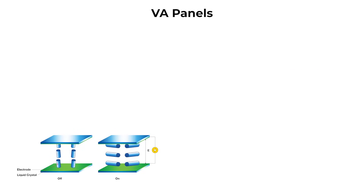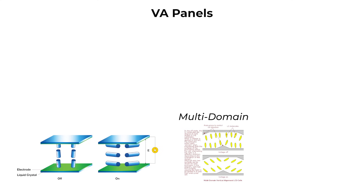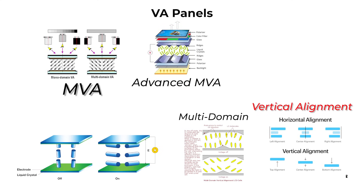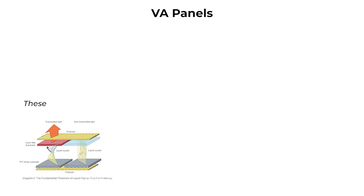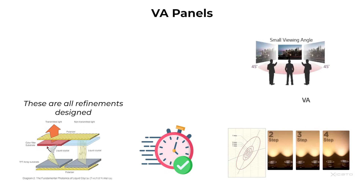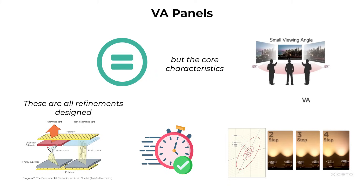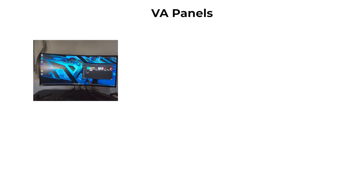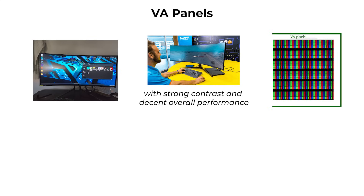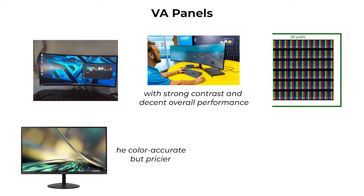There are several variants of VA technology, including multi-domain vertical alignment, or MVA, advanced MVA, and super-VA. These are all refinements designed to improve response time, color consistency, or viewing angle, but the core characteristics remain the same. VA panels balance affordability with strong contrast and decent overall performance, making them a middle ground between the fast but color-poor TN and the color-accurate but pricier IPS.